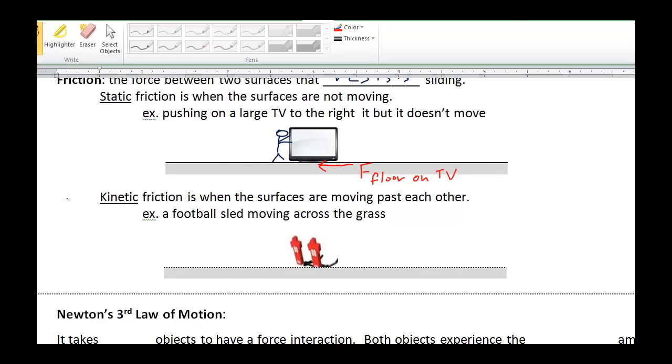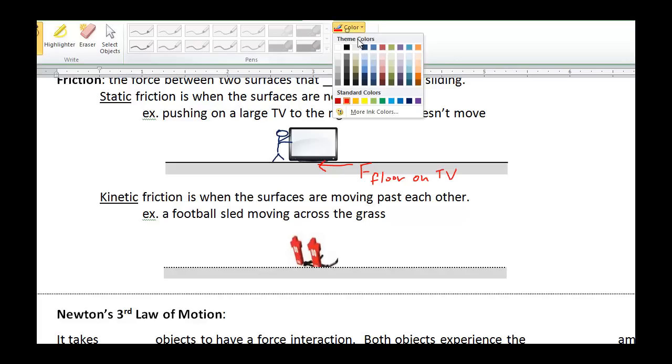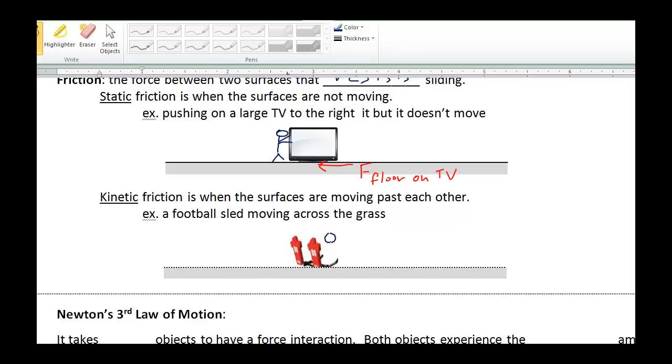The second type of friction is when the surfaces are moving past each other. We call this kinetic friction. Example, a football sled moving across the grass. So, you can imagine we have some San Marcos Royals here on the football sled with their big muscles, and their football helmets, and all that.